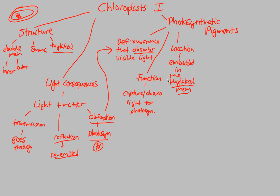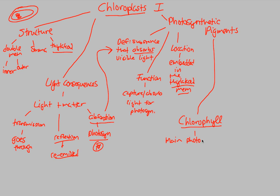Now we understand the location, function, and definition of photosynthetic pigments. Let's talk about a specific photosynthetic pigment — everybody's favorite and the most famous: chlorophyll. It makes sense — chlorophyll is found in the chloroplasts. Chlorophyll is considered the main photosynthetic pigment. It's the number one — it does the most important job of photosynthesis, which is absorbing that visible light and starting everything up.